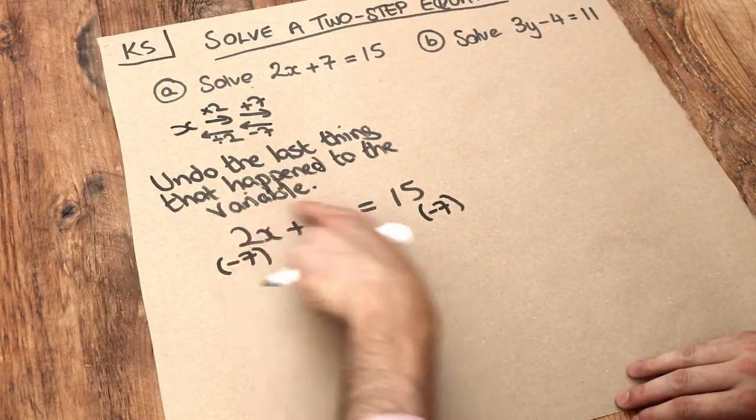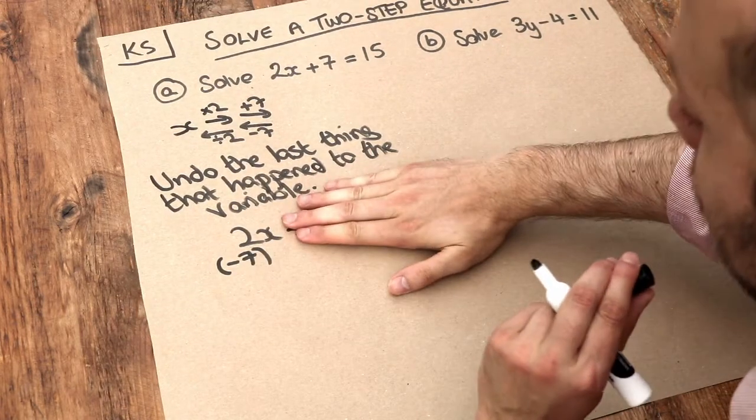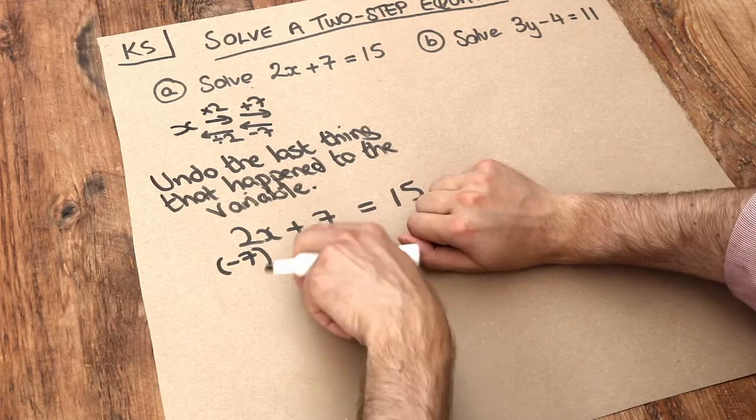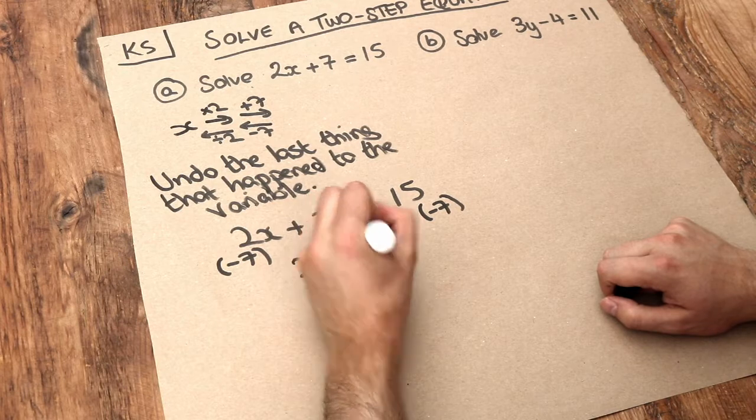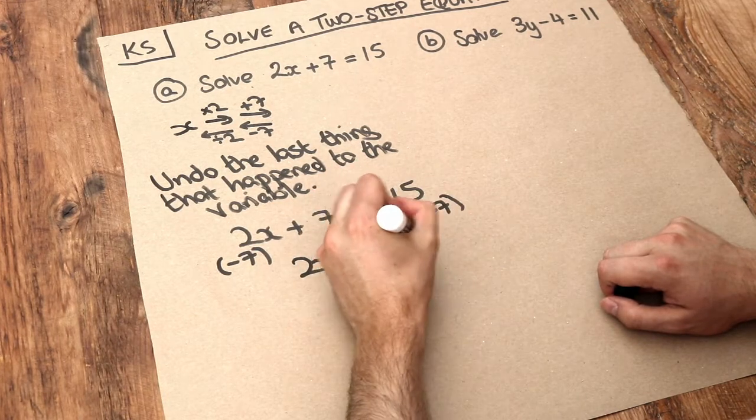If we minus 7 from the left-hand side, that cancels out the plus 7, because plus 7 minus 7 is just 0. It disappears. So we have 2x here, and if we minus 7 from the right-hand side, we get 8.